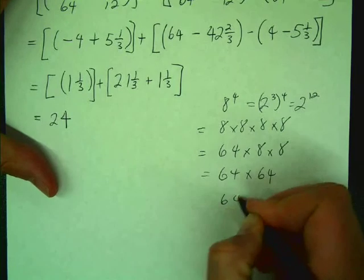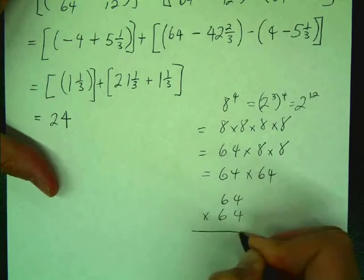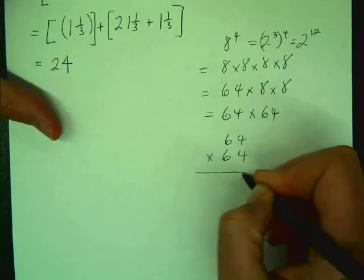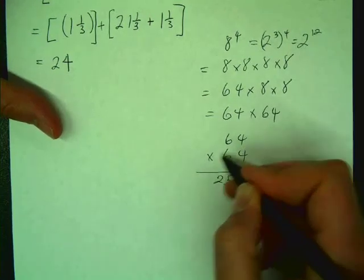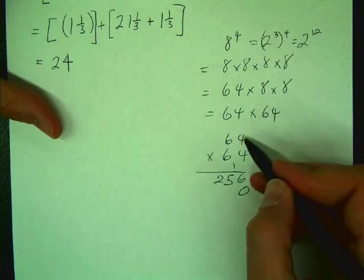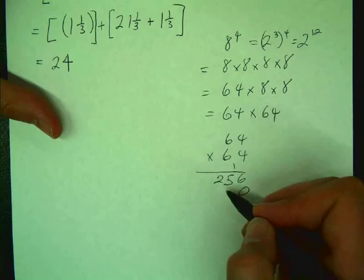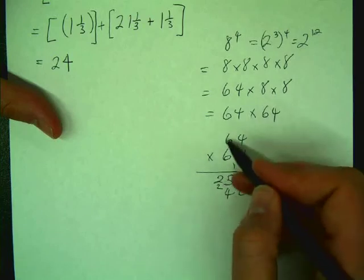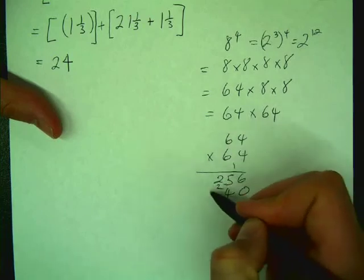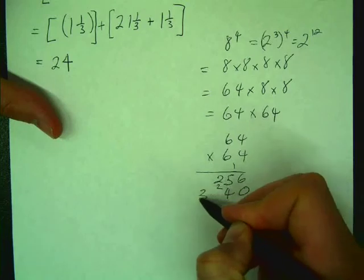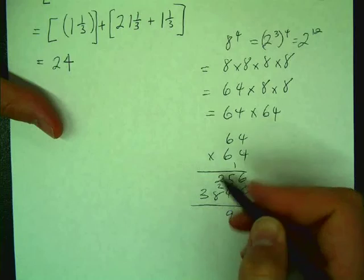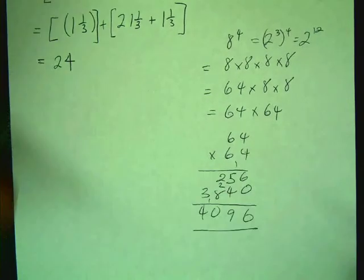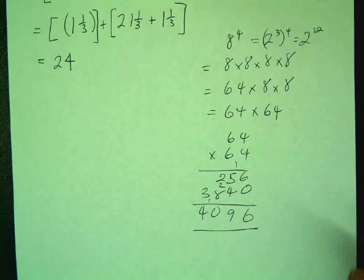Now if you're having problems multiplying those out, just go back again to primary school. 4 times 4 is 16. 6 times 4 is 24, plus 1 is 25. Add the 0. 4 times 24, 24, 36, 36 plus 4, 38, 6, 9. What do I get? 4,096.